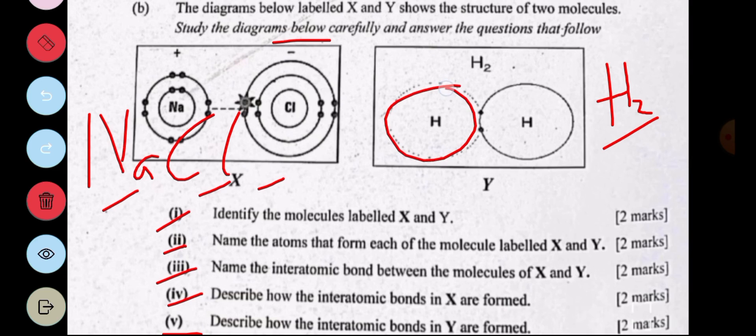So this hydrogen atom had one electron, this hydrogen atom also had one electron. We just brought the electrons closer together to form a stable electron configuration. The two electrons here are being shared, so they all have two electrons on the outermost shell.